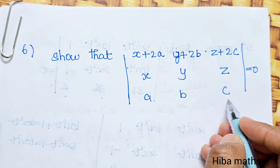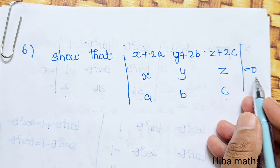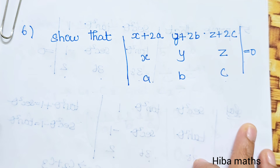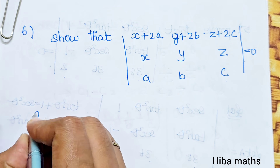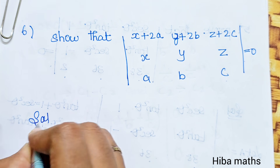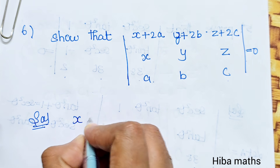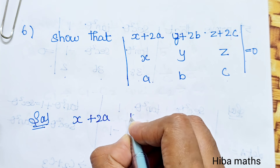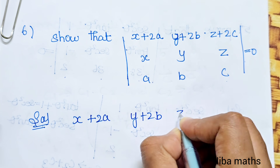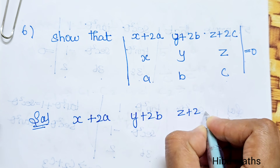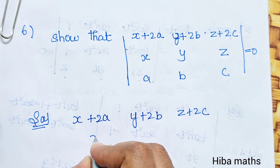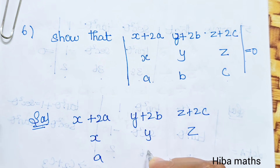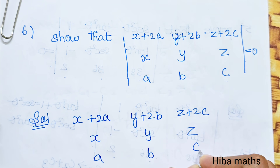The full determinant has rows: first row x plus 2a, y plus 2b, z plus 2c; second row x, y, z; third row a, b, c. The full term is 0, so we can do the solution.